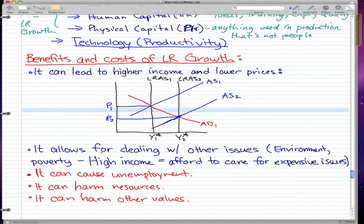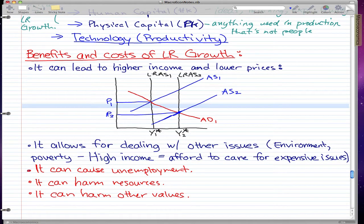But then there are some costs as well. The first cost is it can cause unemployment. If technology gets so much better that we don't need humans and we replace humans with machines, then it can cause unemployment.